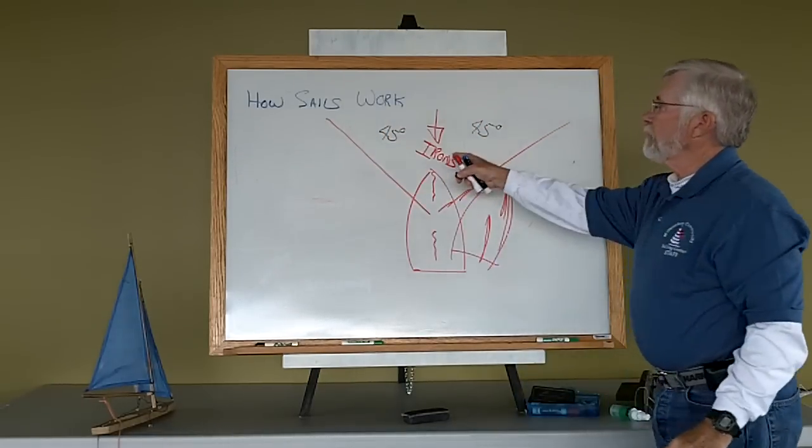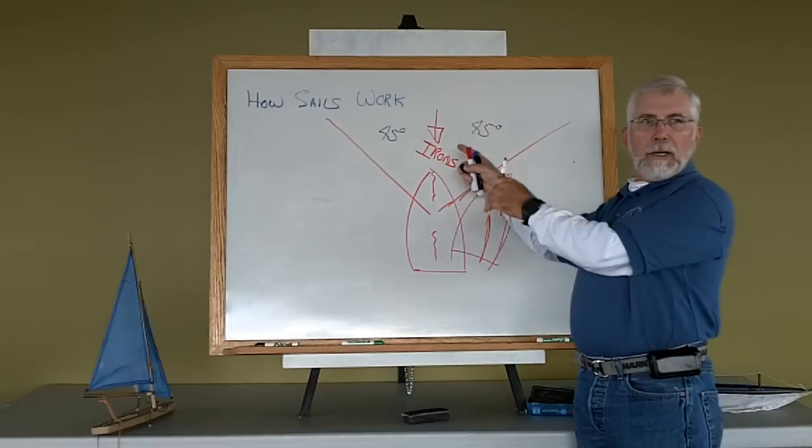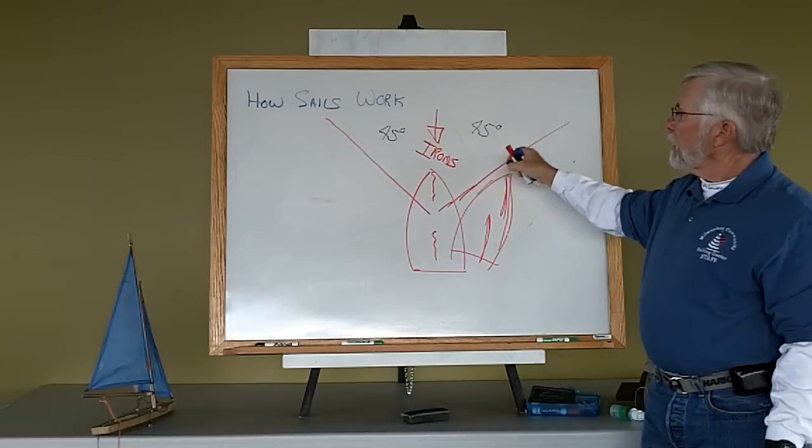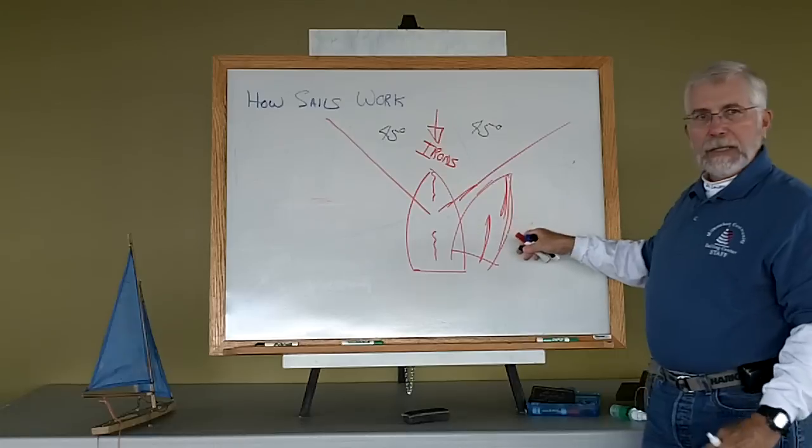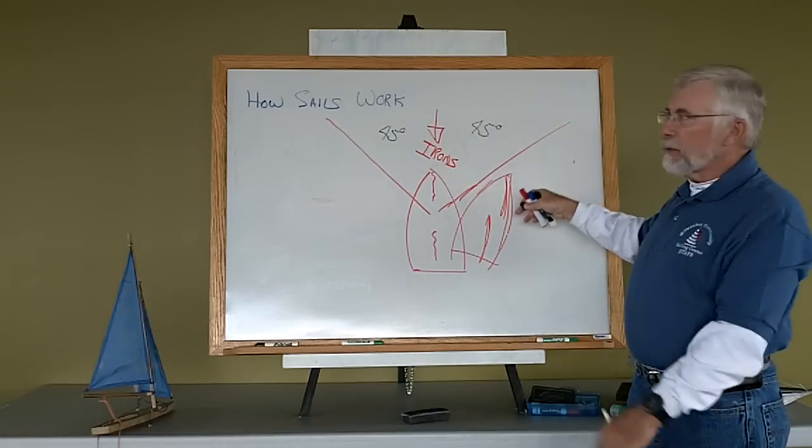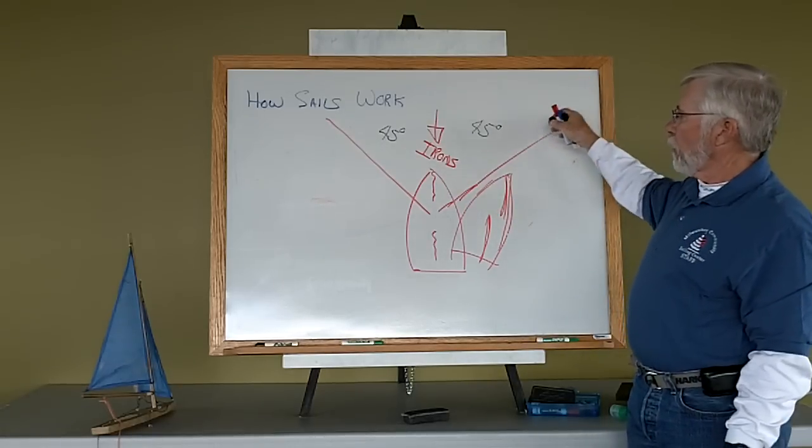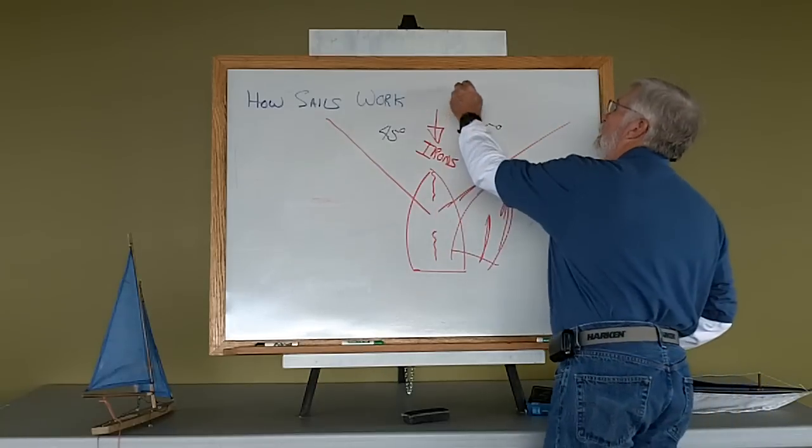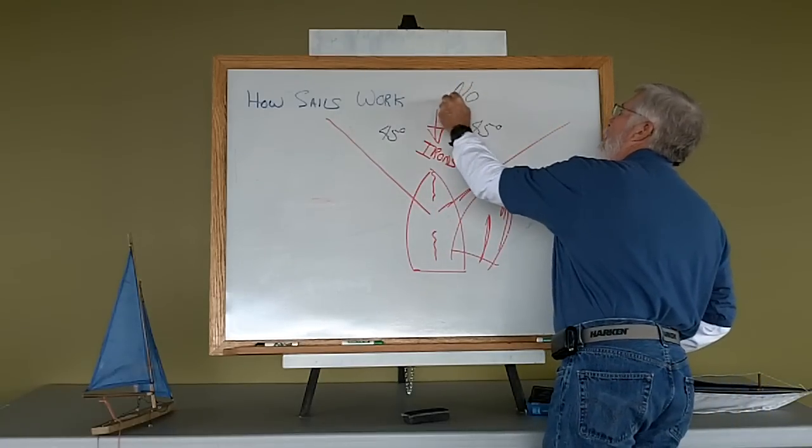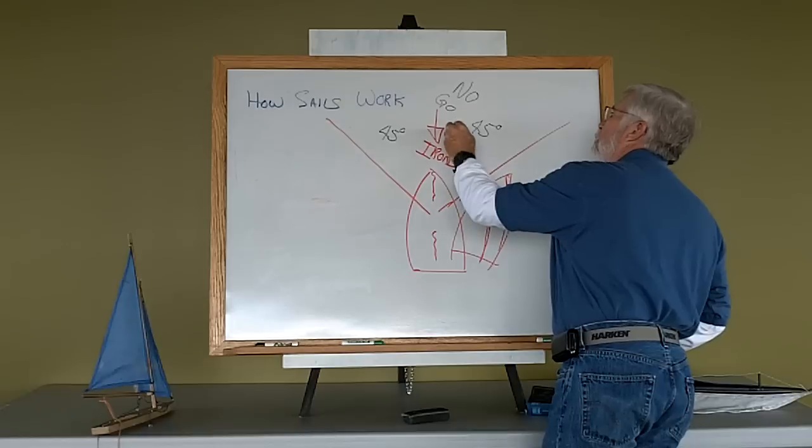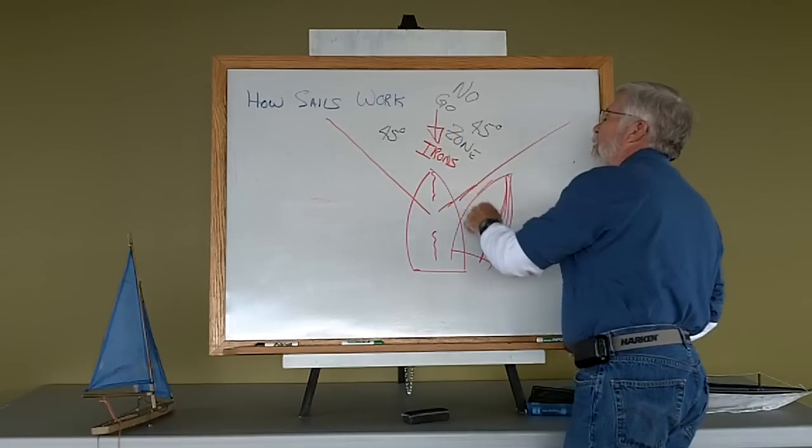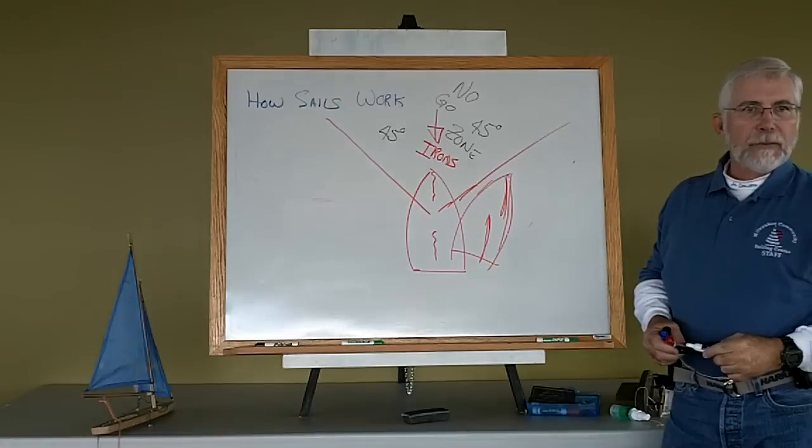Of about 45 degrees on either side directly into the wind, where you can't get enough shape in the sail to create the lift you need to pull the boat forward. This whole range is called the no-go zone, the zone where I really can't drive the boat.